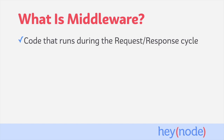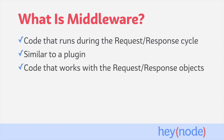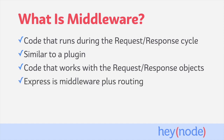Middleware is code that runs during the request-response cycle of your server, and has access to the request and response objects. Middleware can be similar to a plugin — any number of middlewares can be added to your existing application without needing to change much. Middleware will typically read data from the incoming request object and run some code that either augments the request or response object, or otherwise perform some logic based on the incoming request, such as reading and parsing any data sent in a cookie with the request. Express itself is essentially a collection of middlewares plus routing capabilities.